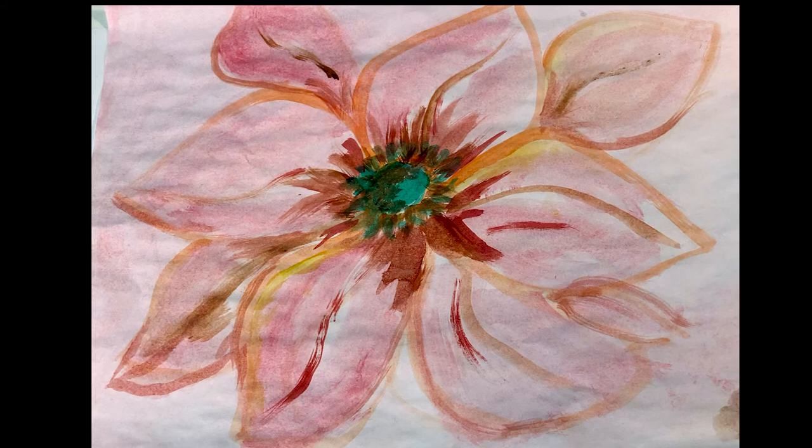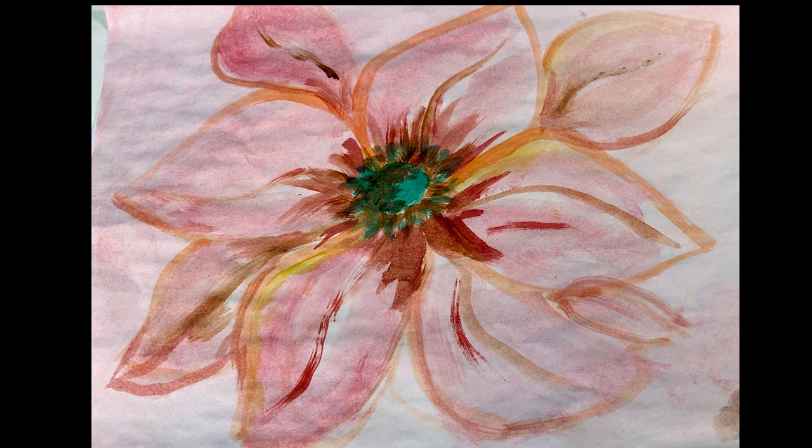So here you can see how I used three different colors. It's a light pink, then I've added some red and brown. And the middle of my flower has green. Let's see what you can do.